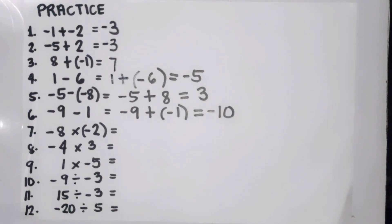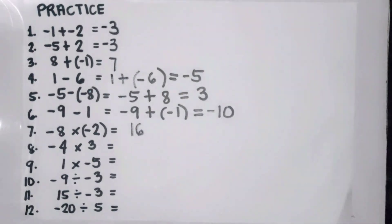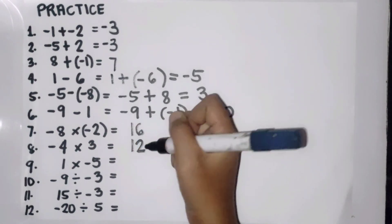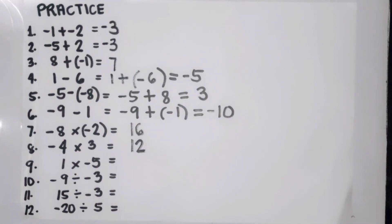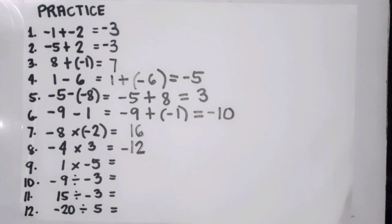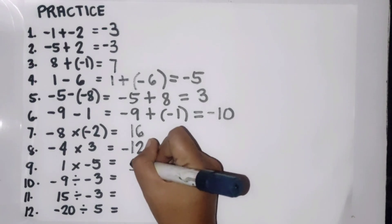Number seven: negative eight times two. Eight times two is sixteen. Since they have different signs, the answer is negative sixteen. Number eight: negative four times three is twelve — different signs, so the answer is negative twelve. Number nine: one times negative five — one times five is five — different signs, so the answer is negative five.